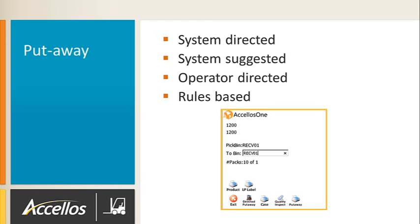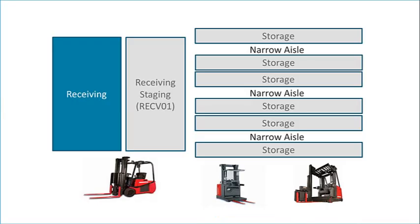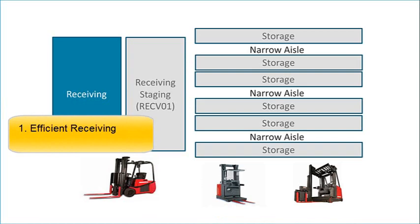Larger warehouses, or those with more complex processes, typically prefer a rules-based put-away process that may follow strict FIFO rotation by moving all product through an overstock reserve storage zone. This may involve direction to a staging location before put-away or to a specific set of locations. Many warehouses use a receiving staging location to serve as a buffer between receiving and product put-away. Receiving staging serves two purposes: it enables an efficient receiving process by allowing receiving operators to focus on accurate receiving and moving the product to a general staging location, rather than taking the time to drive into the warehouse and store the product. The second purpose deals with material handling equipment — equipment used for receiving is typically different than equipment used for put-away, and the staging location serves as the transition point to allow the use of the correct type of equipment for the job.